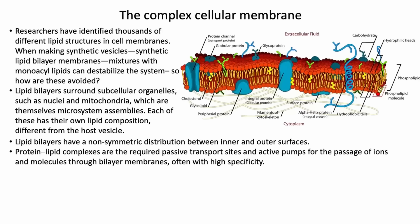Within each one of those, you have other organelles like nuclei and mitochondria that have their own bilayer assemblies with their own constitution — different than what's on the outside of the cell. Nobody knows how that was done. And there's this non-symmetric distribution, then there are proteins that go through here.